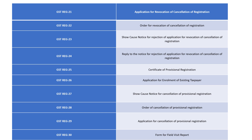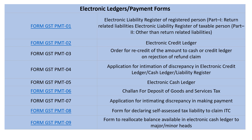Next, we cover the electronic ledger payment forms (GST PMT series). GST PMT-01 is the electronic liability register for a registered person — Part 1 covers return-related liabilities, and Part 2 covers liabilities other than return-related. GST PMT-02 is the electronic credit ledger.